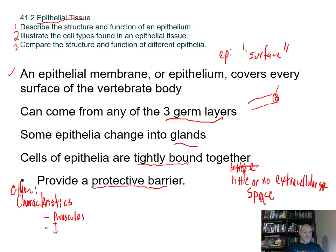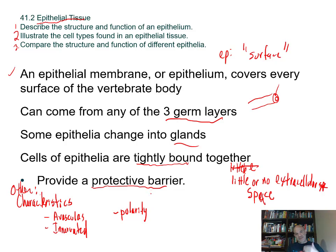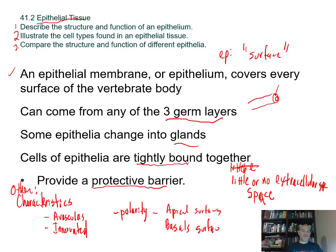Epithelia are innervated, meaning they have nerve endings, so this tissue can respond to stimuli and communicate with your nervous system. Epithelia also have a polarity: one side is attached to deeper tissues (the basal side) and the other side is free (the apical side). This gives the tissue a distinct polarity — apical surface on top and basal surface below.